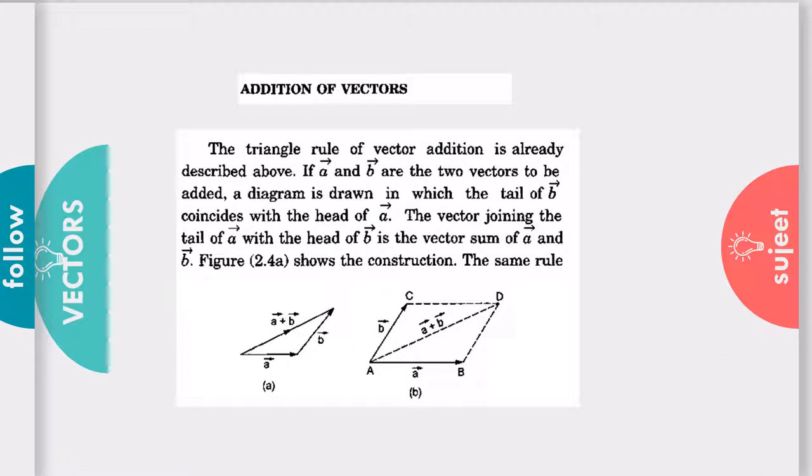thing, we will get a parallelogram. This is the triangle—if we repeat in the upper part also, we will get a parallelogram. So it is also called the parallelogram rule of vector addition.